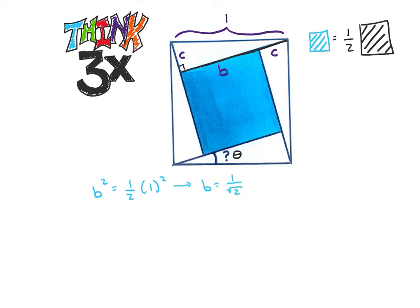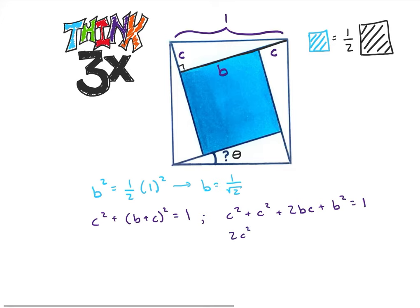We can then use the Pythagorean theorem to say that C squared plus the side length B plus C squared has to be equal to one. We can rewrite that as C squared plus C squared plus two B C plus B squared is equal to one. But we already know B. So this is going to be two C squared plus two C over square root of two plus one over square root of two squared is equal to one. I'm going to go ahead and subtract one from both sides to make this minus one half equal to zero.